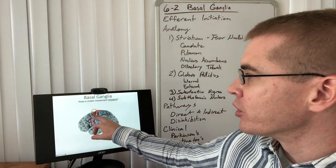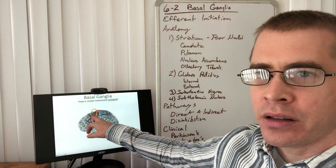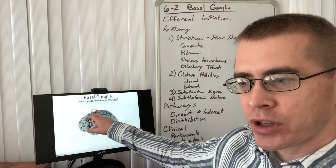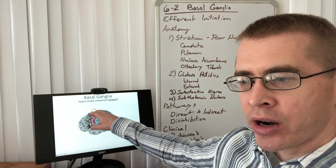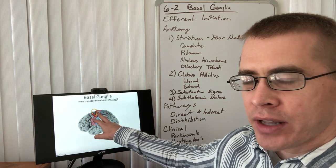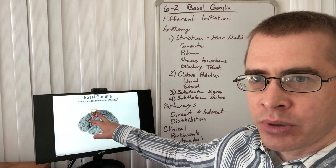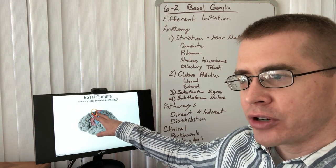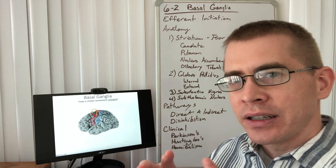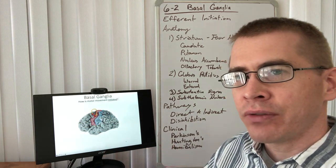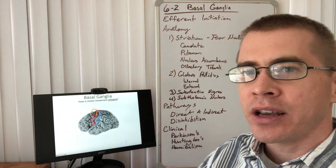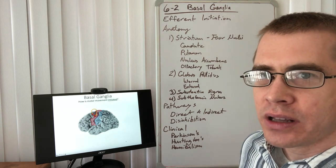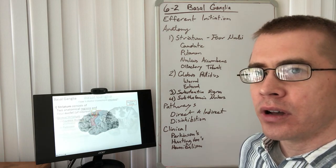The motor output is programmed by the supplementary motor area, and then that sequence is outputted to the pre-central gyrus. But the basal ganglia deep in the prosencephalon is saying when to release that motor output.